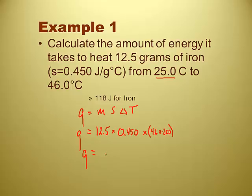So 21.0 for the change in temperature. Multiply that by 0.45 and then multiply that by 12.5. And I get 118 joules for this particular piece of iron. Hey, I did it right. That's the same as the answer we had started with, right? Awesome. That's easy.